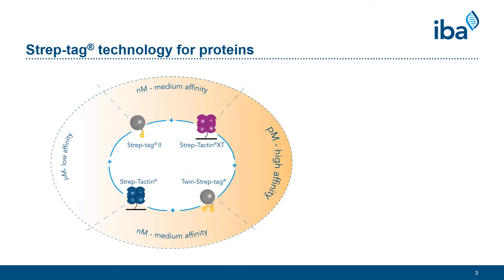One very important aspect of the StrapTech technology for proteins is the availability of different tags: the StrapTech2 and its twin version, the twin StrapTech, and the two engineered Streptavidin variants, Streptactin and its high-affinity variant, Streptactin XT. Different combinations of tag and ligand result in different affinities, and this is the basis of the broad range of possible applications.